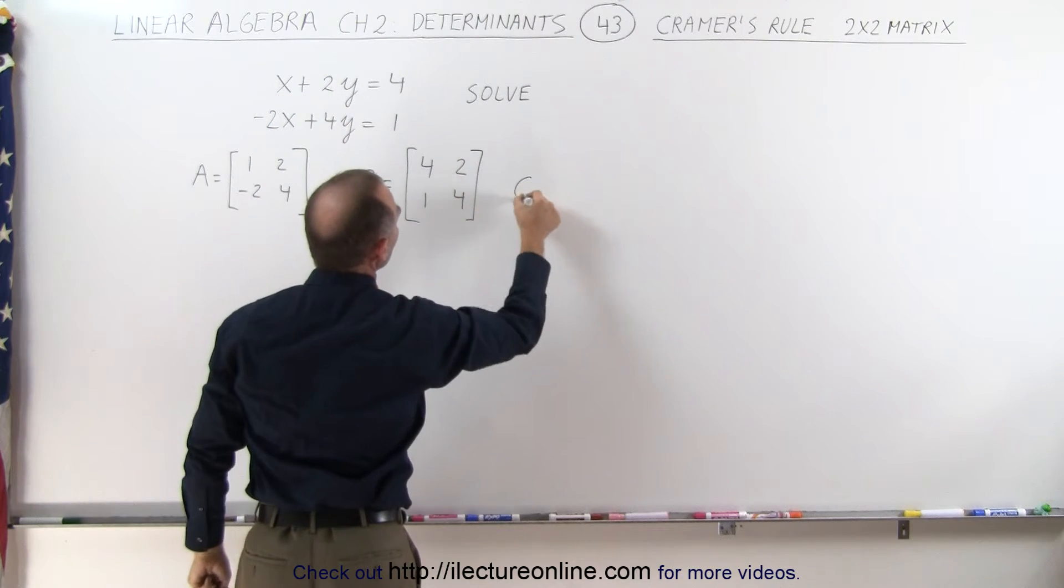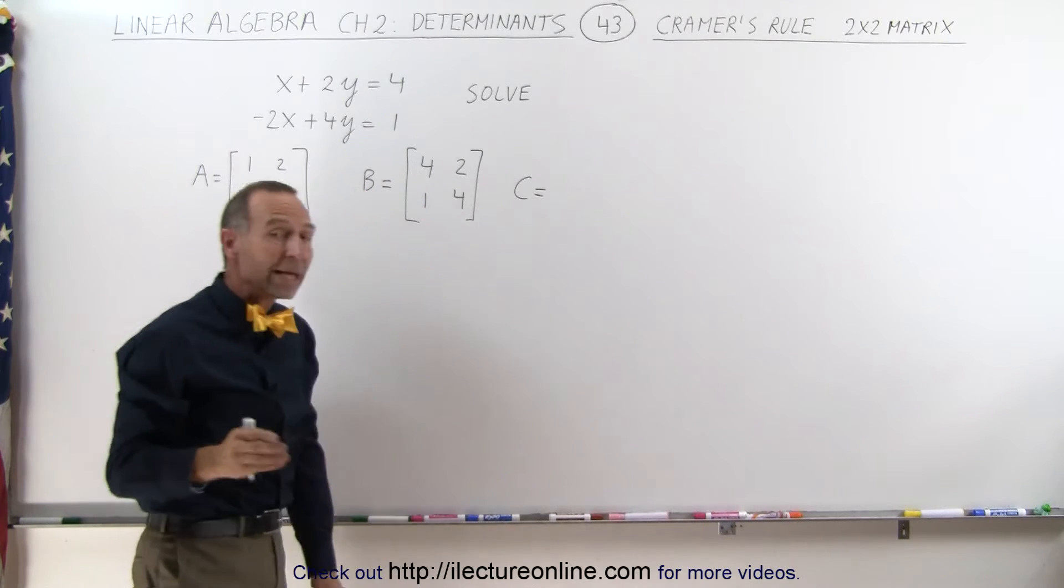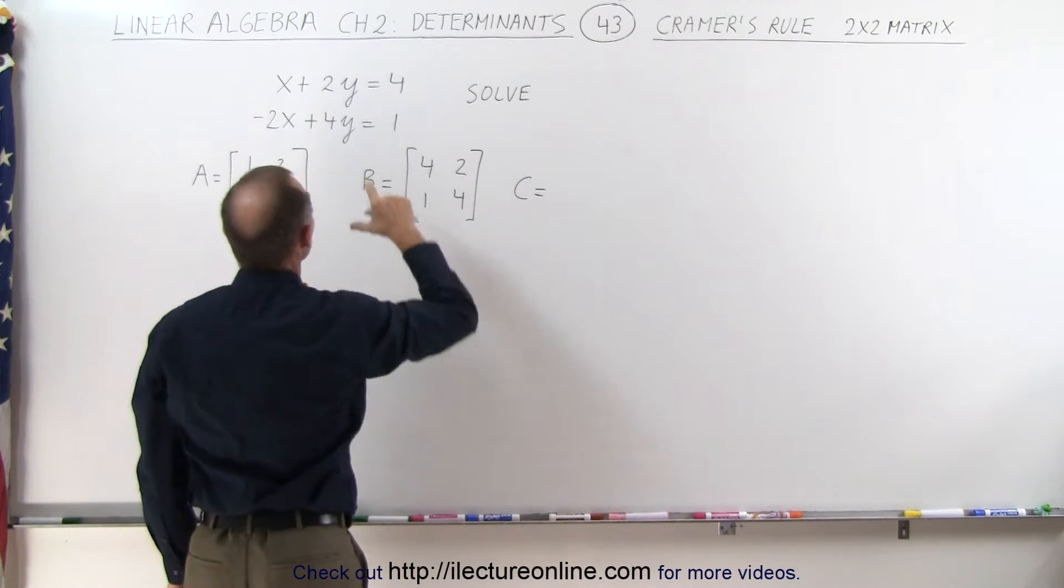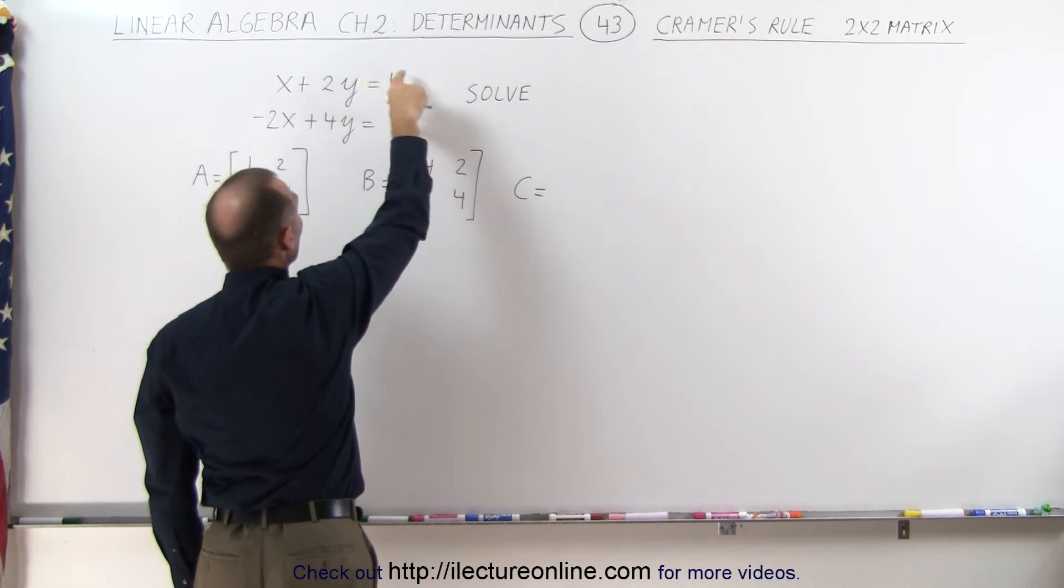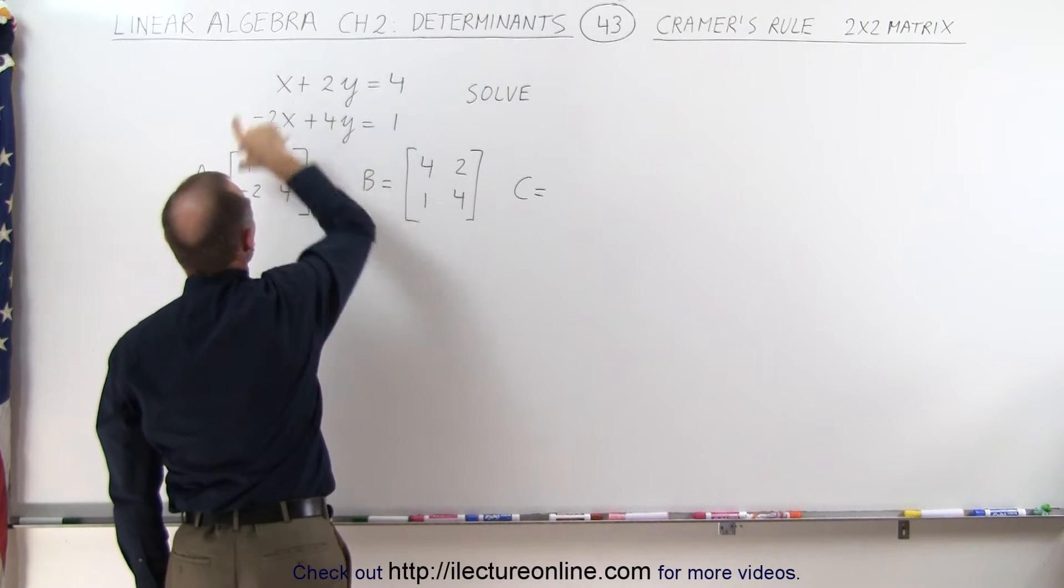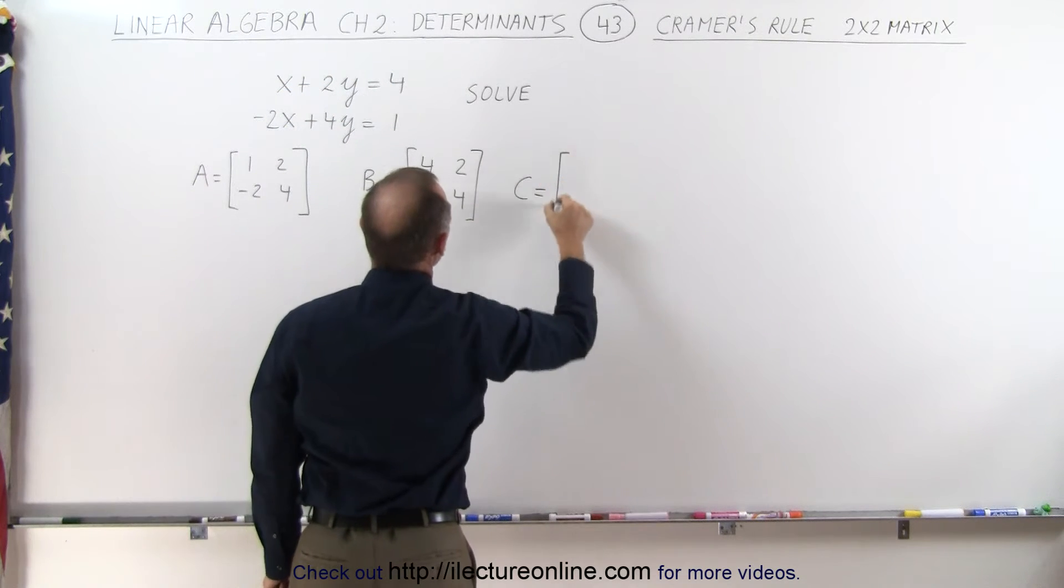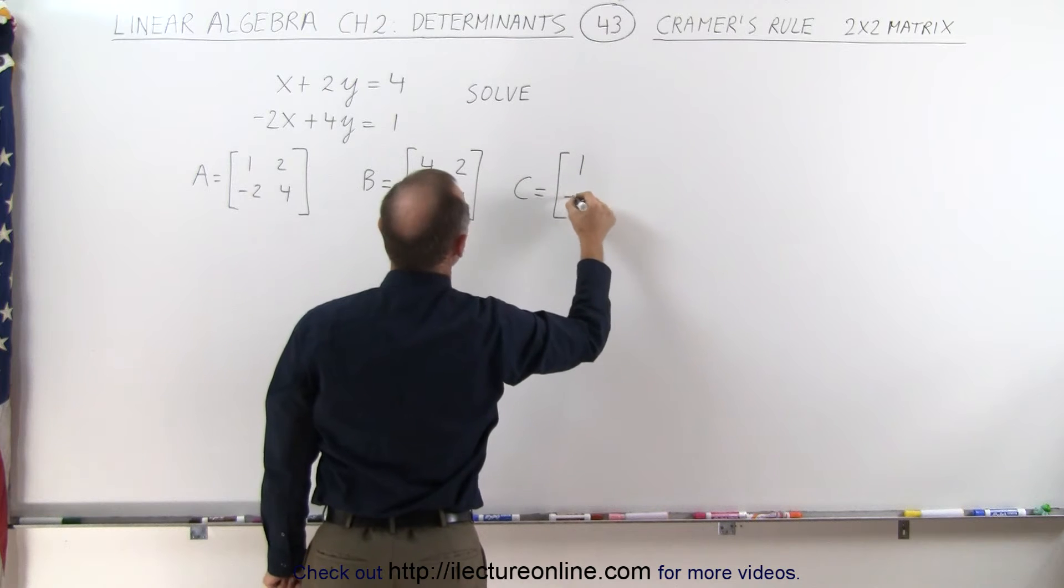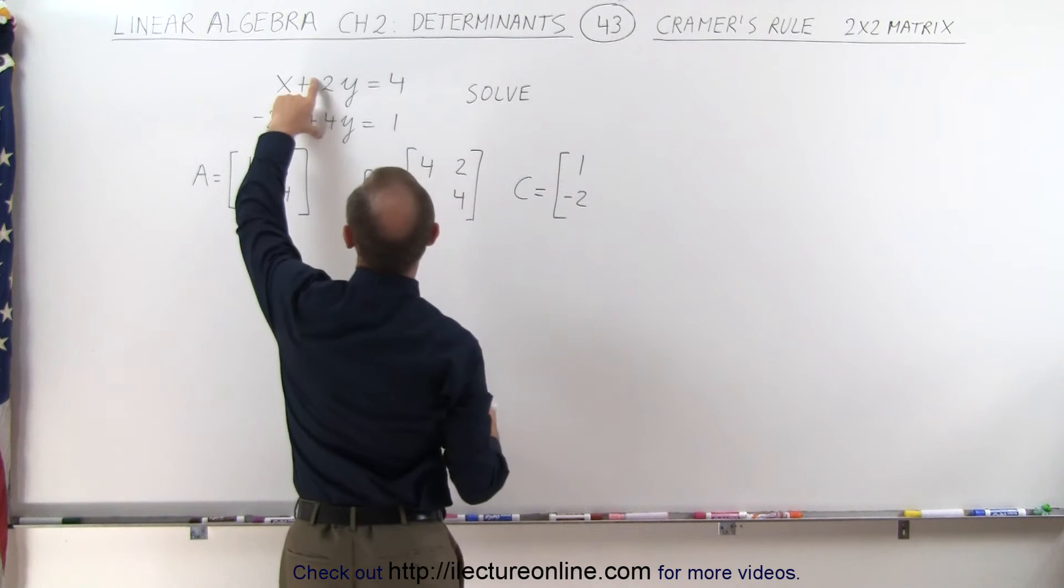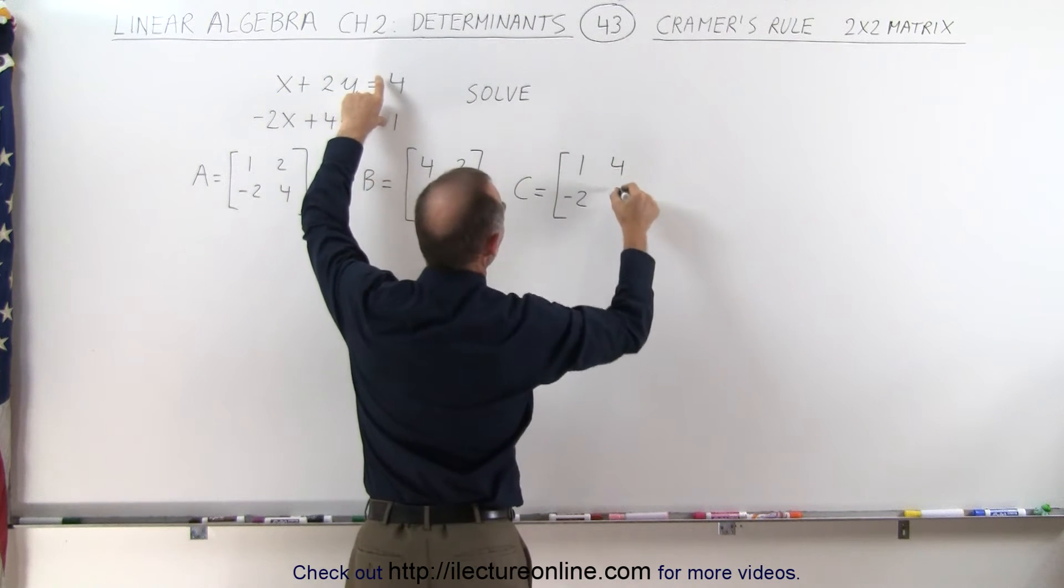Now we create a third matrix, let's call it C, and we create that matrix by replacing the coefficients of the second variable with these constants and returning the coefficients of the first variable as they were. So here again we get 1 and -2 for the first column, but the second column now becomes 4 and 1.